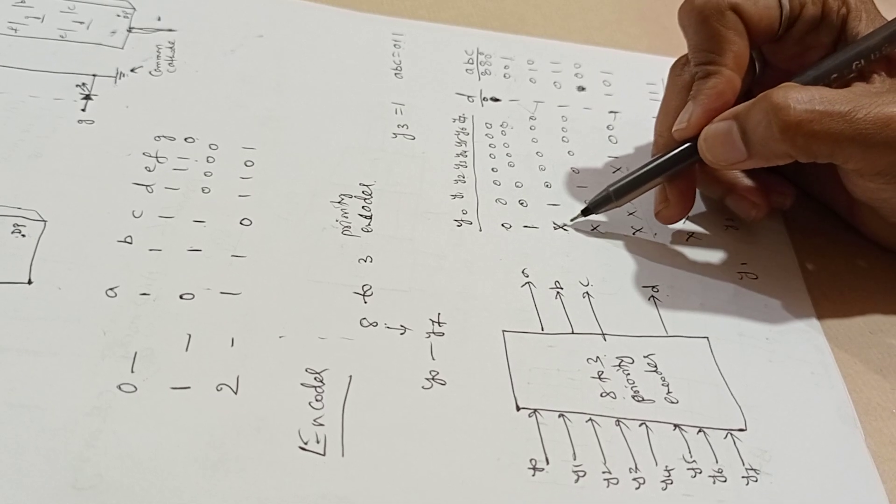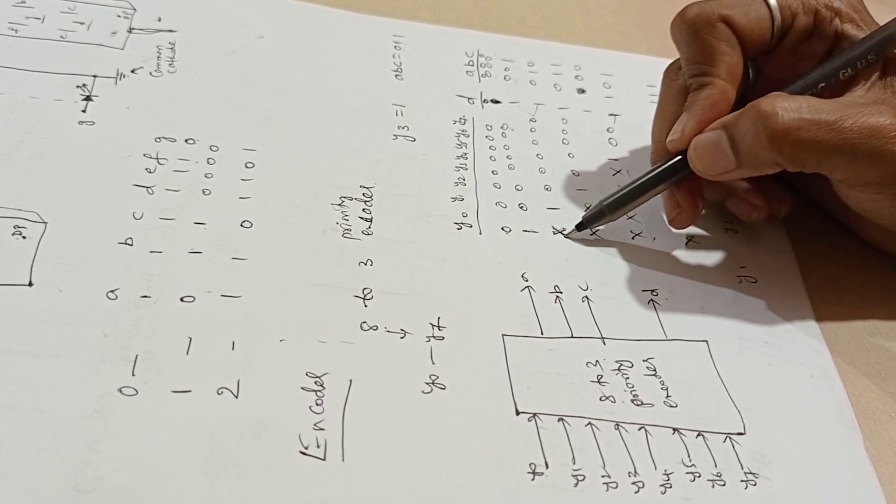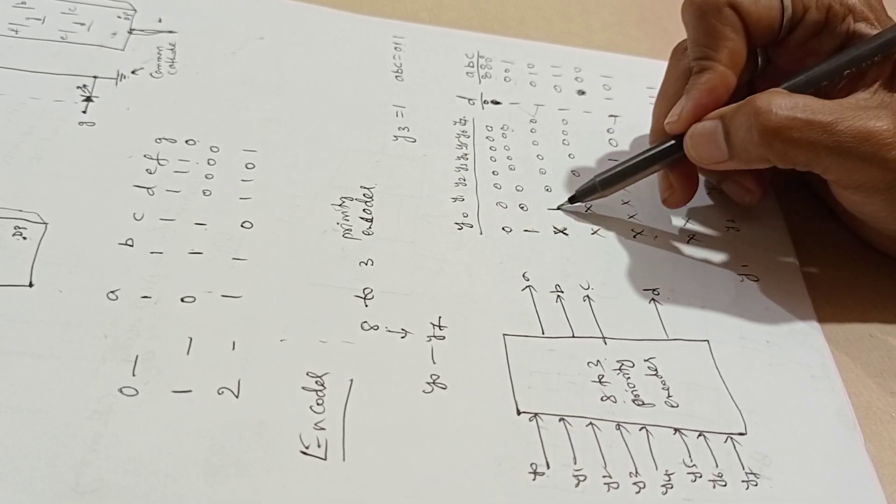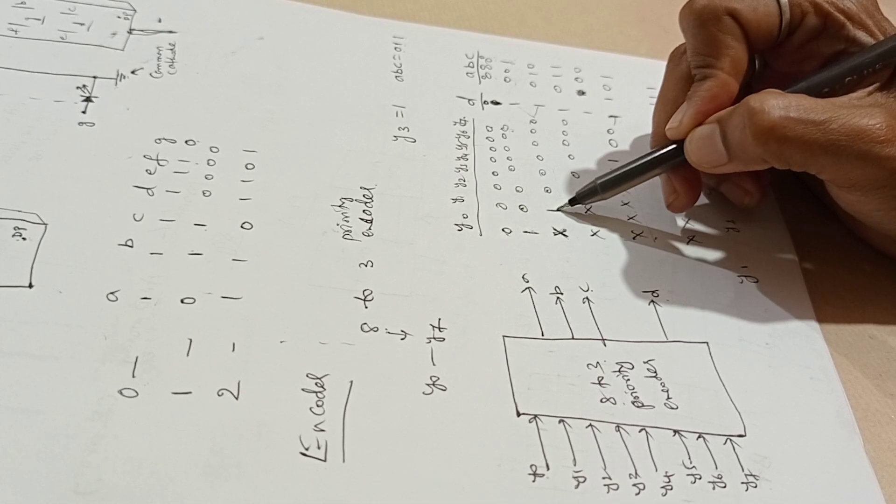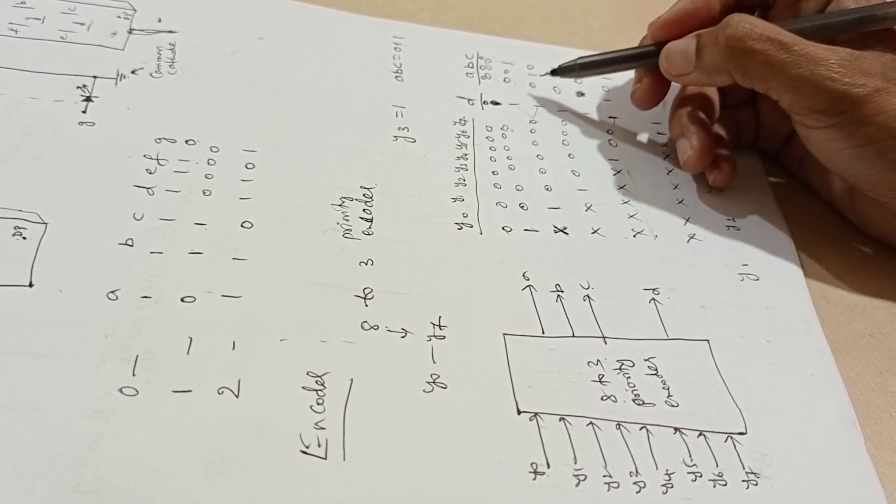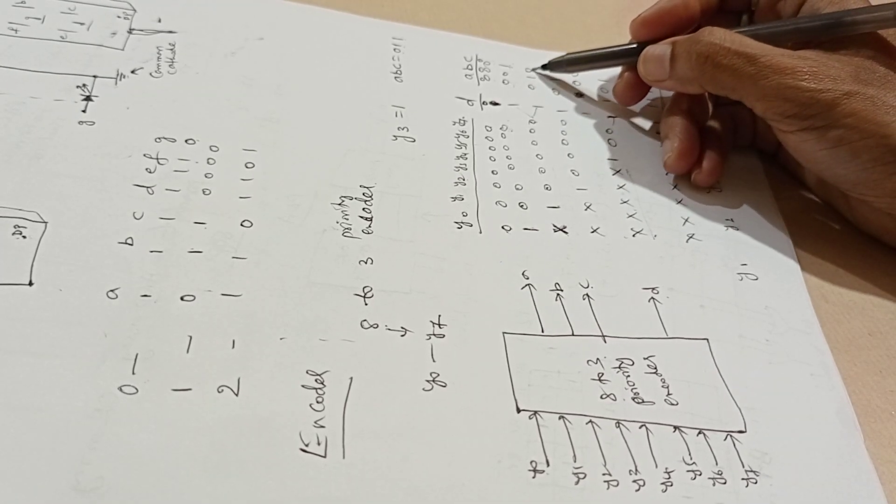Same for 2, Y0 is already used so make it don't care because of priority, and Y1 is 1. This becomes 2, the ABC values are 010.